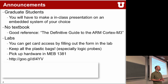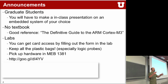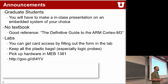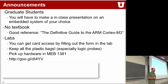For labs, you can get card access to the digital lab by filling out one of the forms there. They will give you access to the lab — it's 24/7, so you can go whenever you want unless another class is being taught in there. You can pick up the hardware at MEB 1381. You sign a paper confirming receipt, and then you have the hardware checked out for the rest of the semester so you can work at home if you want.